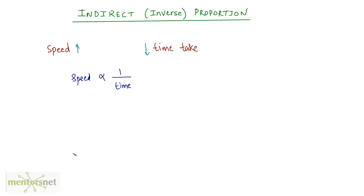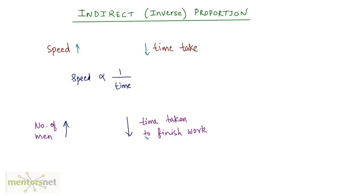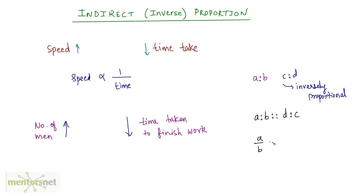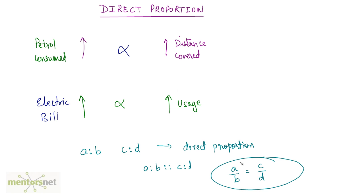Another example of inverse proportion: if you have number of men and the time taken to finish work, the more the number of men, the less time it takes to finish the work. More men will do more work and hence finish the work faster. Theoretically, if we take two ratios A is to B and C is to D that are inversely proportional, then A is to B is proportional to D is to C — the inversion of the other ratio. So A by B equals D by C. When you have inverse proportion, you invert one of the ratios and equate it with the other.